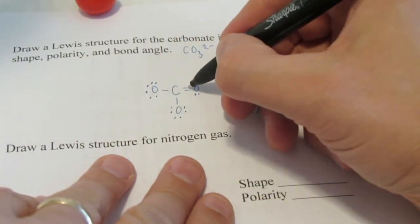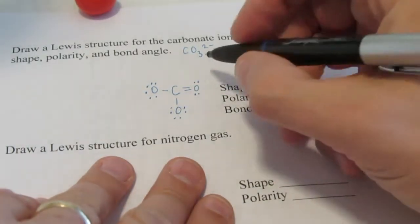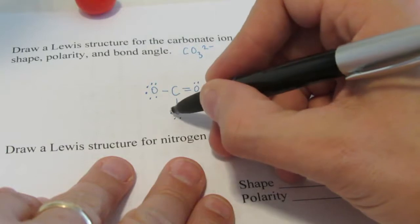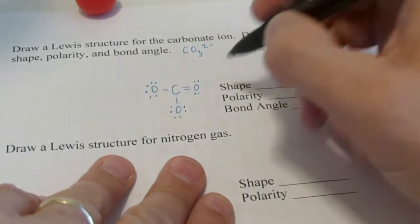And this one needs three more pair. And carbon's okay because it has two, four, six, eight around it. Let's see how many valence electrons we've used. Two, four, six, eight, ten, twelve, fourteen, sixteen, eighteen, twenty, twenty-two, twenty-four. And that's exactly what we're allowed.